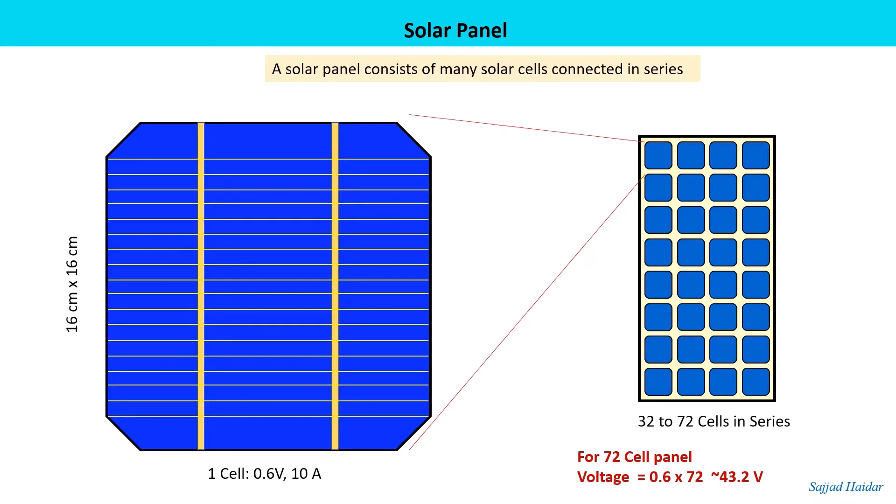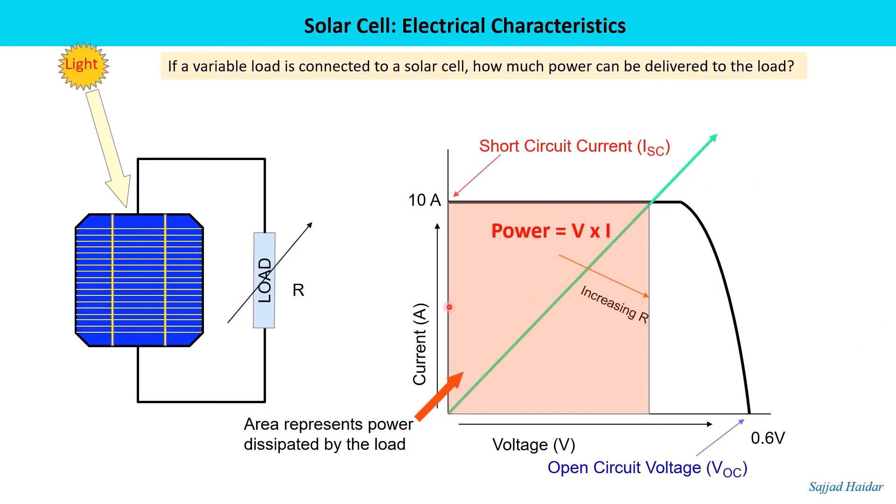A solar panel consists of many solar cells connected in series. Usually the standard size solar cell, 16 centimeter by 16 centimeter, gives maximum 10 amp at the brightest sunshine - that is 1000 watt per meter square. And if we are using a 72 cell solar panel it gives 0.6 multiplied by 72, that is 43.2 volt.